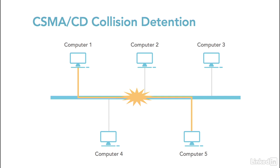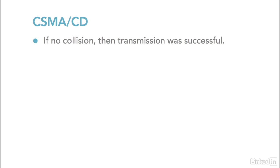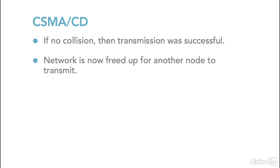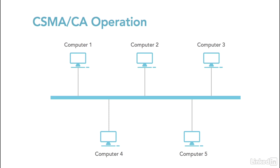If a collision doesn't take place, CSMA/CD considers the transmission successful and the network is freed up for another node to transmit. Generally, a successful CSMA/CD operation works like this: computer 1 needs to send a packet to computer 3, so computer 1 listens to the network. If it doesn't hear any traffic, it releases its packet onto the network and the packet travels to computer 3. The other computers hear the packet go by, know the network is freed up, and the contention process starts all over again.